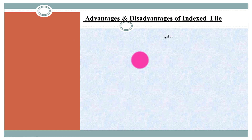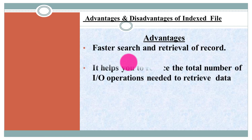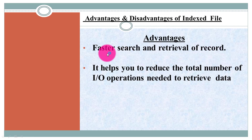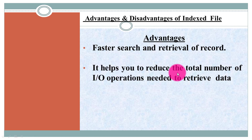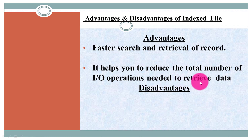Now let's see the advantages of indexing. Because of indexing it makes searching and retrieval of records faster. The second advantage is that it helps to reduce the total number of input/output operations needed to retrieve data. Since the index file contains only the search key value and block pointer, it reduces the total number of I/O operations required.